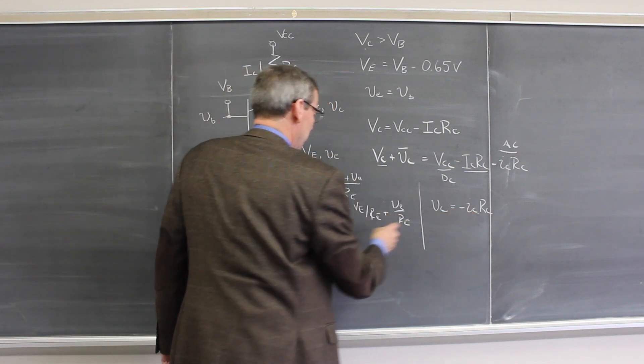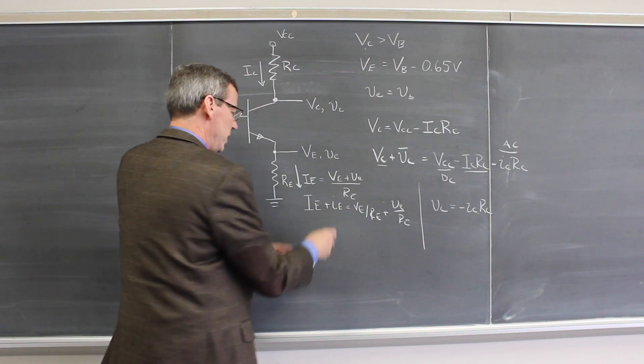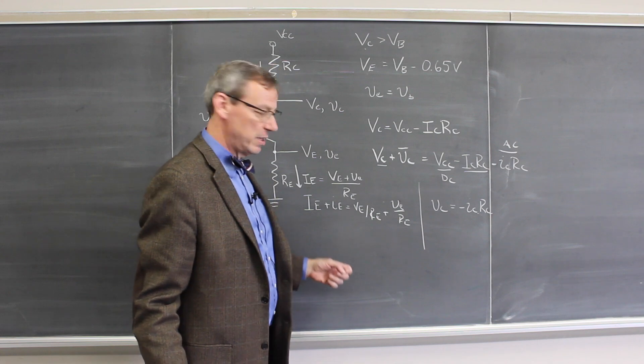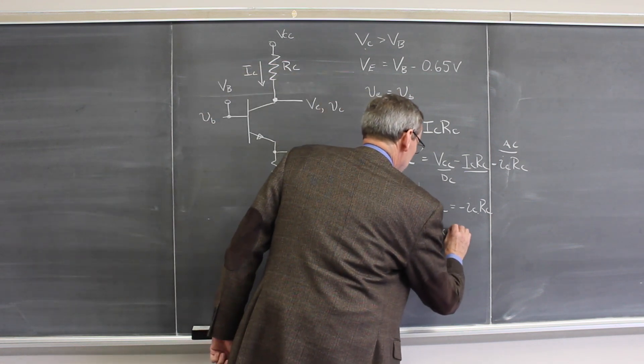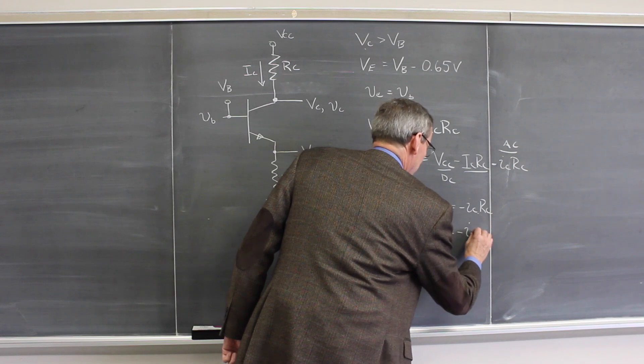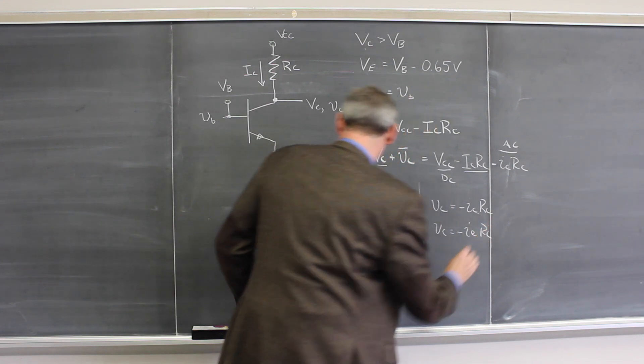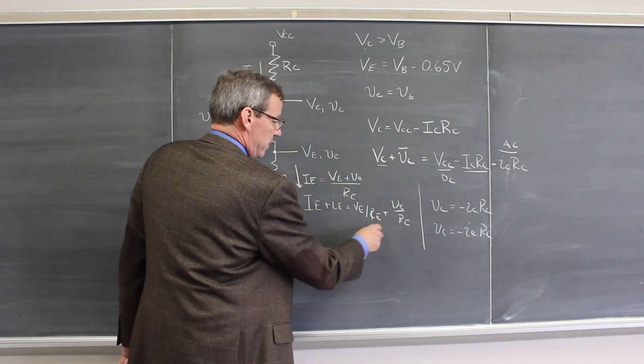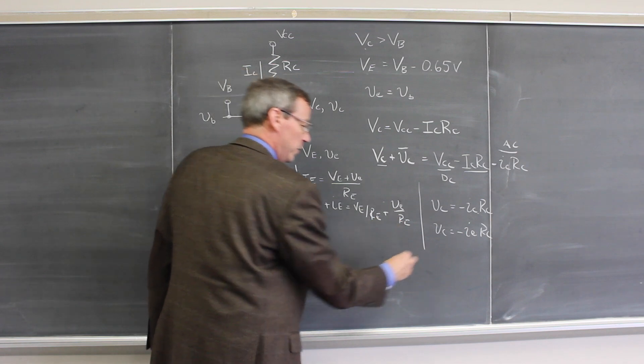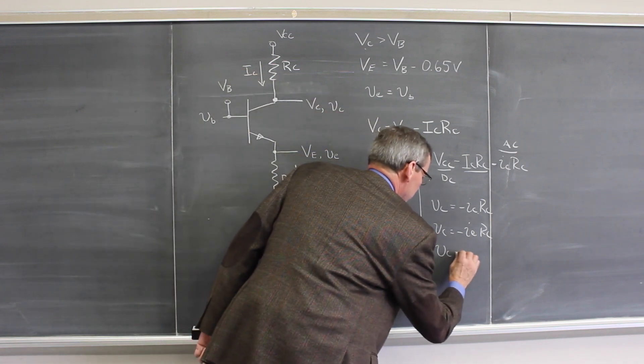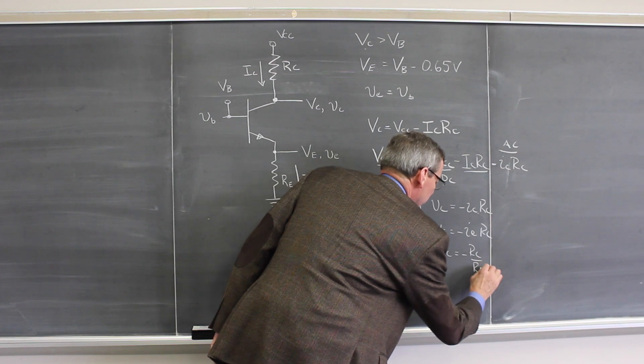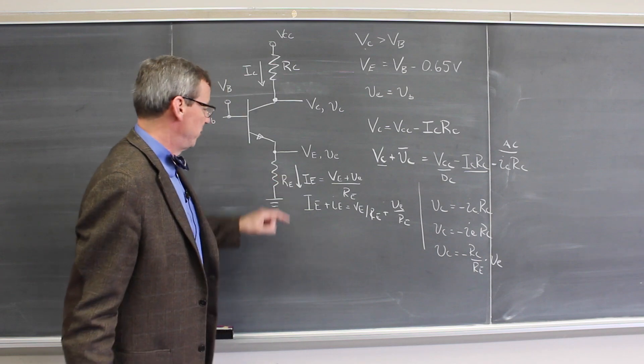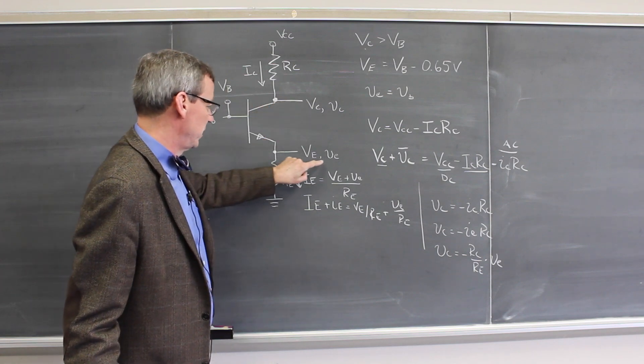Now the collector current is pretty much equal to the emitter current. So I could replace the collector current with the emitter current. So I could actually write this VC is minus IE RC. And then I can put in what that is in terms of the AC voltages. VC is going to be minus RC over RE times VE. So that now gives me a relationship between the collector voltage and the emitter voltage.